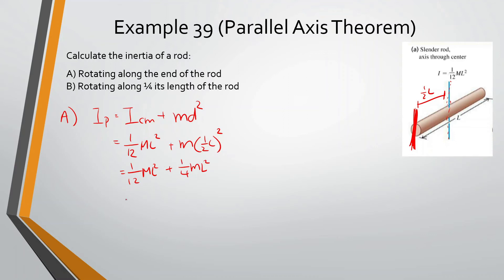Which is what? Turns into three twelfths. So this is going to be equal to four twelfths ml squared, which is equal to one third ml squared. And if you memorize that, you would have already known that answer. But it just shows how to do it mathematically.